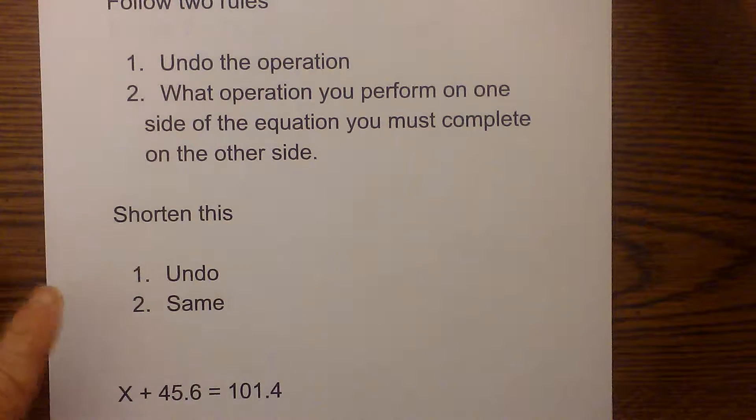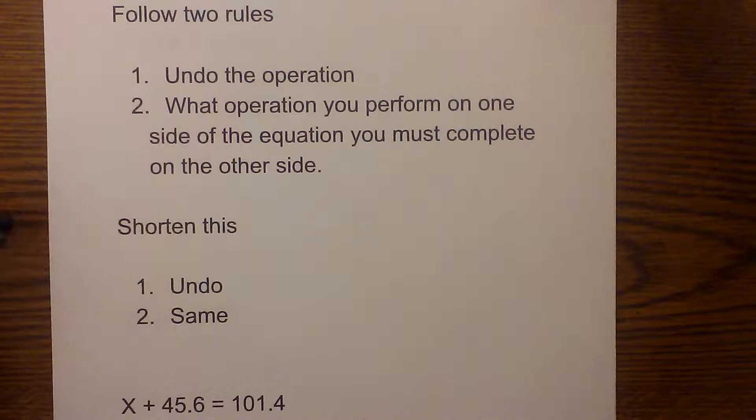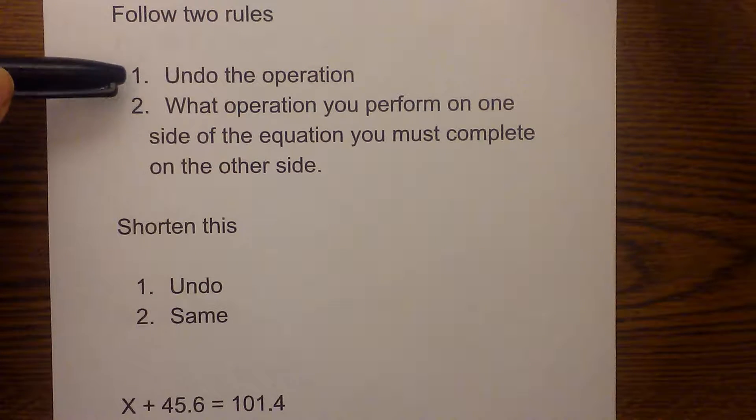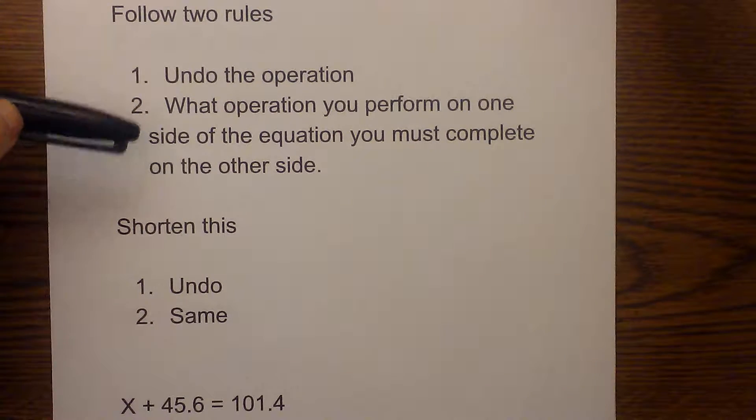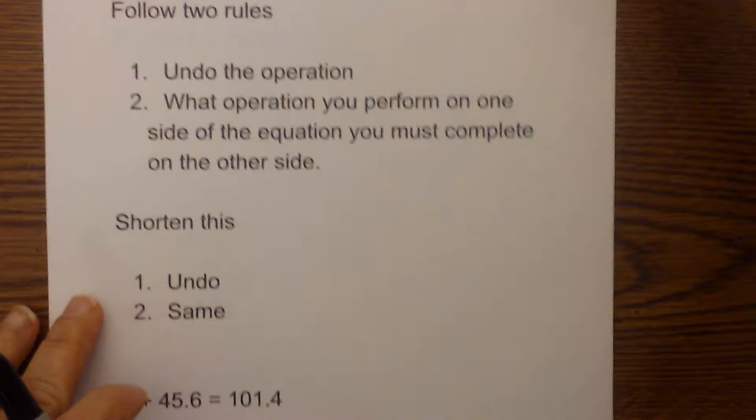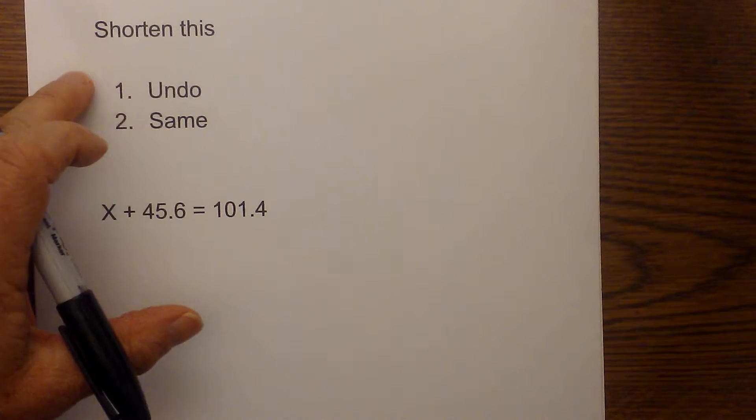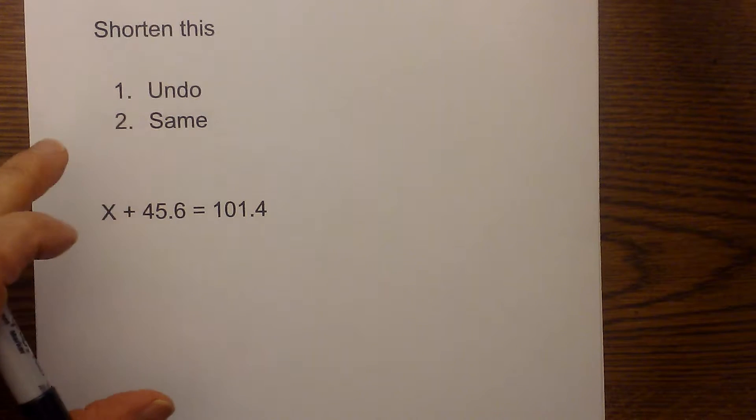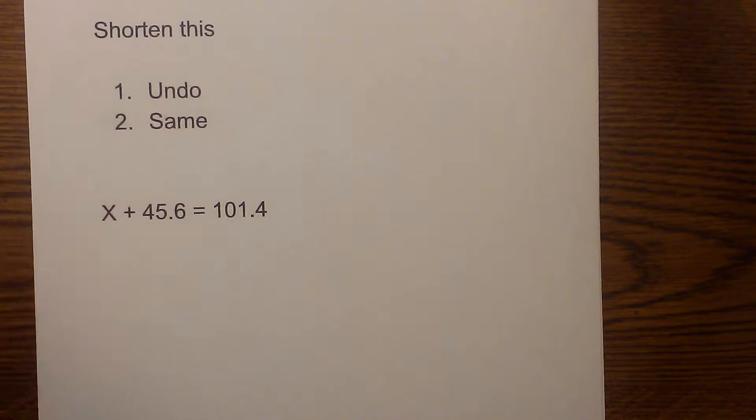In this video I would like to review how to solve one-step equations that involve decimals. With one-step equations there are two things to remember. First you undo the operation, and then whatever operation you perform on one side of the equation you must complete to the other. The way I like to remember this is I just shorten this to undo and same. So you are going to undo the operation and always perform the same operation on both sides.